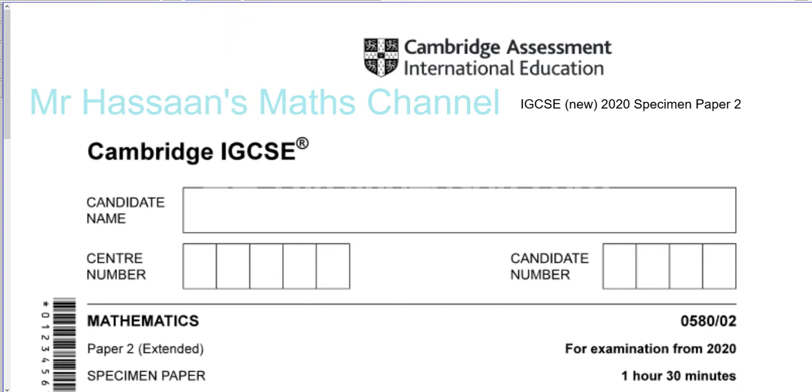go through Paper 2 of the new specimen, the new 2020 syllabus for the International GCSE, University of Cambridge IGCSE. So I'm going to start with the Paper 2, and I'm going to start with the specimen paper. The syllabus changed quite drastically for the first exam in June 2020, which was cancelled due to COVID.